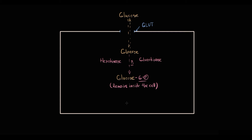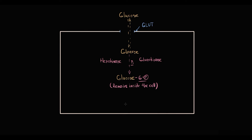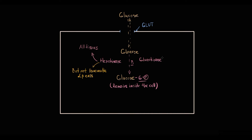So once glucose gets phosphorylated, glucose remains inside the cell. Hexokinase is found in basically all tissues except pancreatic beta and alpha cells. Glucokinase is found only in liver tissue and pancreatic beta and alpha cells.